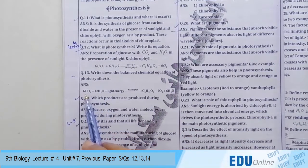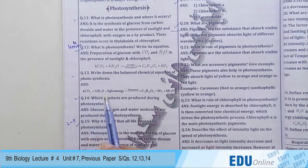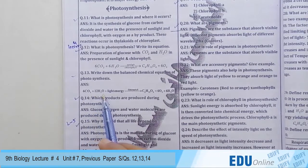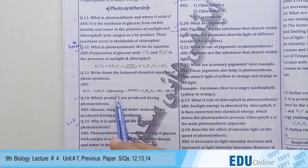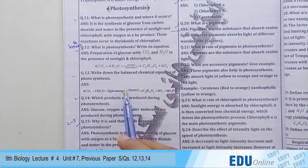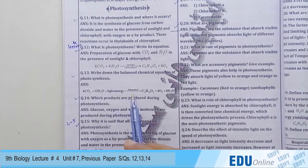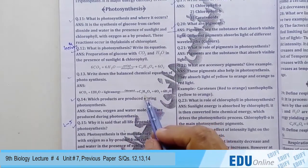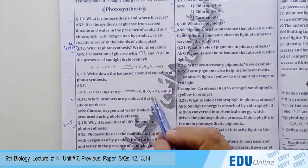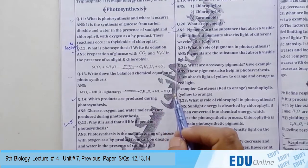As I explained earlier, six molecules of carbon dioxide, twelve molecules of water, and light energy is added. In the presence of chlorophyll, this whole process occurs and glucose is formed: C6H12O6 plus six oxygen plus six water molecules.